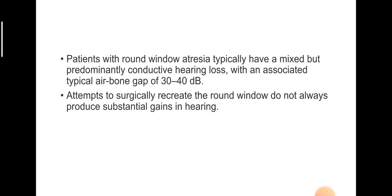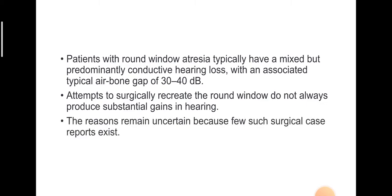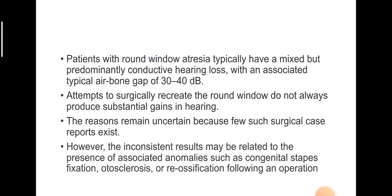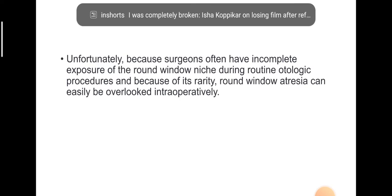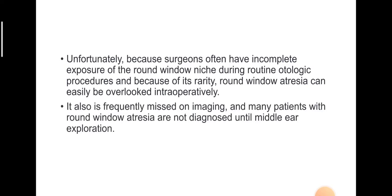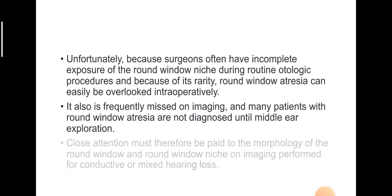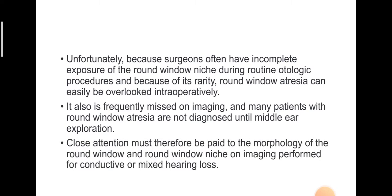Attempts to surgically create the round window do not always produce substantial gains in hearing, and the reasons remain uncertain. The inconsistent results may be related to associated anomalies such as congenital stapes fixation, otosclerosis, or re-ossification following surgery. Because surgeons often have incomplete exposure of the round window niche and because of its rarity, round window atresia can easily be overlooked intraoperatively and is frequently missed on imaging. Close attention must be paid to the morphology of the round window and niche on imaging performed for conductive or mixed hearing loss.